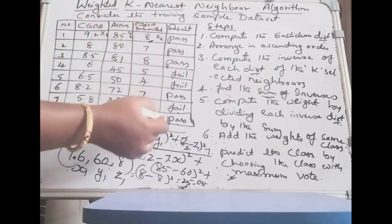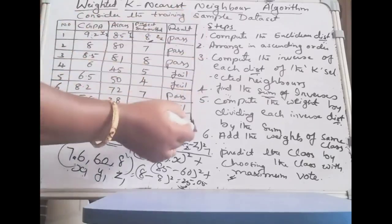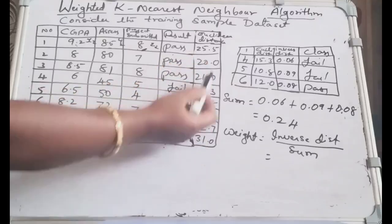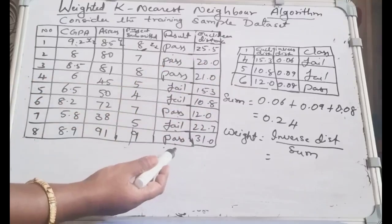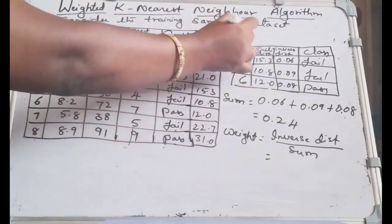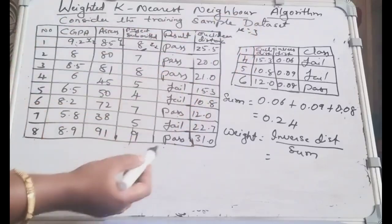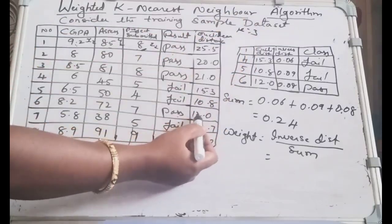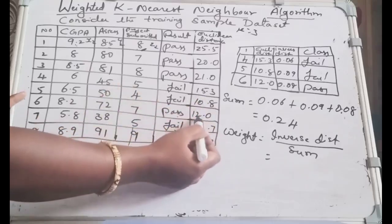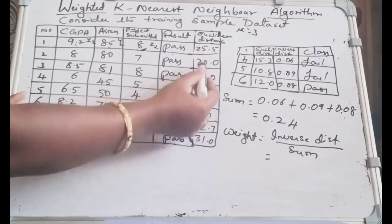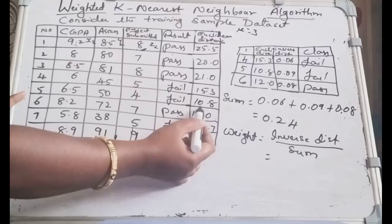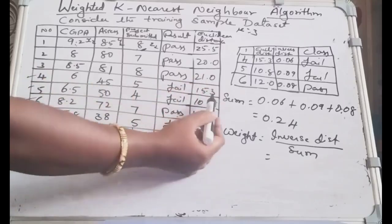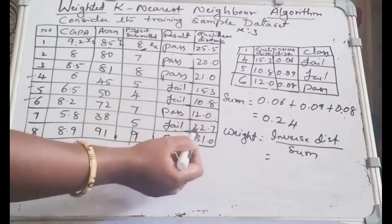Compute the Euclidean distance for all 8 instances and write the column. Then arrange in ascending order. Since k = 3, we select the 3 nearest neighbors. The 3 nearest are instances 4, 5, and 6, with Euclidean distances of 10.8, 12.0, and 15.3 respectively — all are below 20, while the rest are above 20.